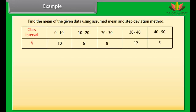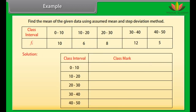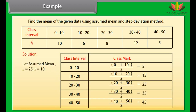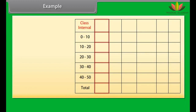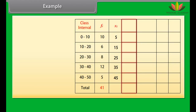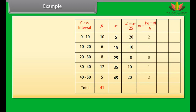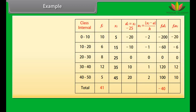Example: Find the mean of the given data using assumed mean and step deviation method. Solution: First find the class mark for each class interval using: class mark equals (upper class limit plus lower class limit) divided by 2. Let assumed mean a equal 25 and h equal 10. In the table, the first column has class intervals, the second has frequencies, with sum of frequencies equal to 41. We then write class marks xi, find di (deviation from assumed mean), and ui (deviation divided by class size). The sum of fi·di is minus 40 and the sum of fi·ui is minus 4.